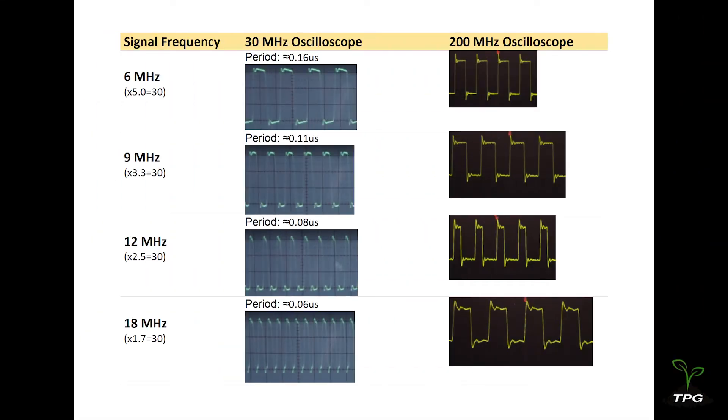Let's check the test result. The input signal is a square wave, consisting of the fundamental frequency plus an infinite number of odd harmonics of that frequency. For example, the odd harmonics of a 6 MHz square wave are 18 MHz, 30 MHz, and 42 MHz.